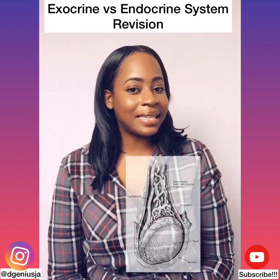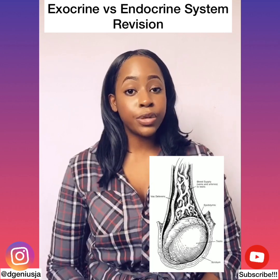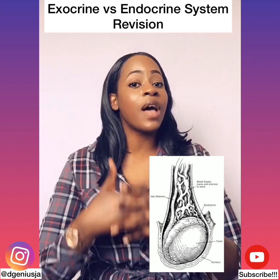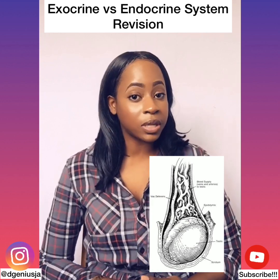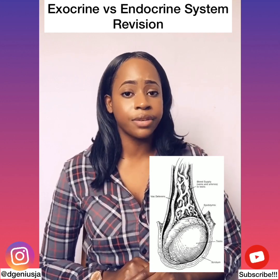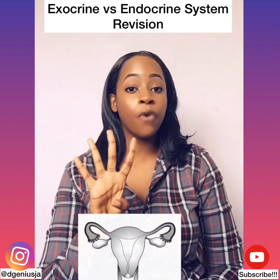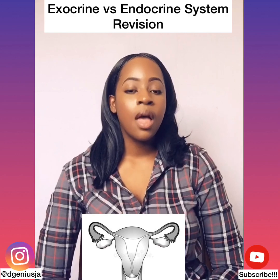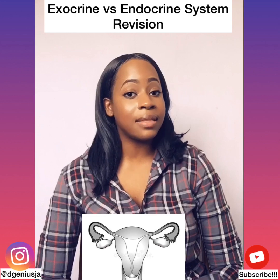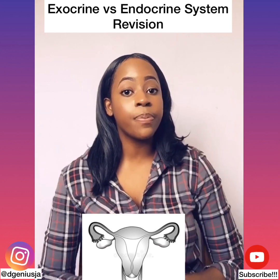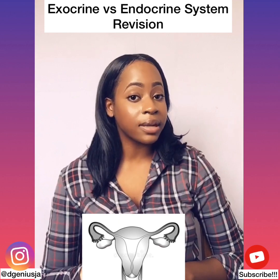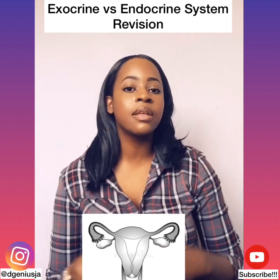Number three, the testes. The testes produce a hormone called testosterone, which helps in the development of the male reproductive tissues as well as the male secondary sexual characteristics. Number four, the ovaries. The ovaries secrete estrogen and progesterone, which function in the development of the female reproductive tissues, the female secondary sexual characteristics, as well as menstruation.